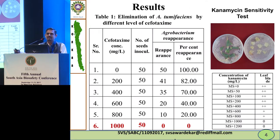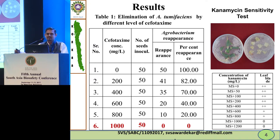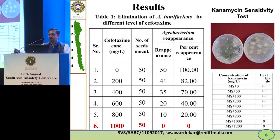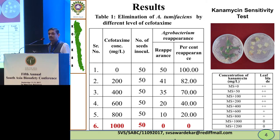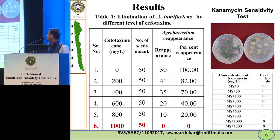Elimination of Agrobacterium is also a major task. We used cefotaxime of medical grade, and at a concentration of 1,000 mg per litre, no reappearance of Agrobacterium was observed. For kanamycin screening, at 1,000 mg per litre kanamycin, putative transgenics could be screened at higher doses, and an albino phenotype was observed at higher kanamycin doses.